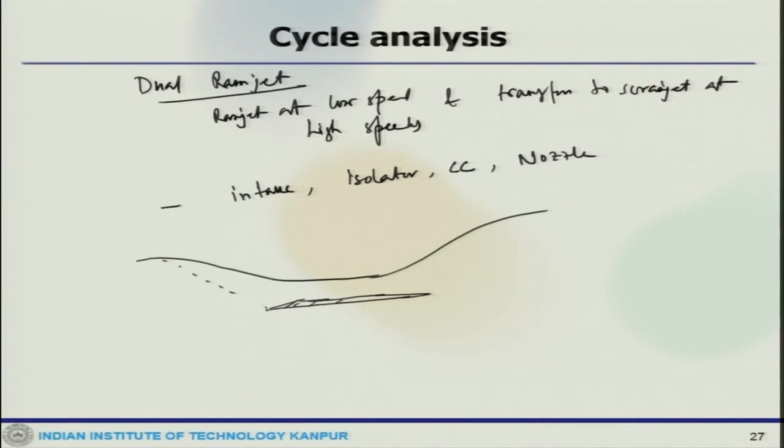Now this portion is essentially the intake, then there would be this portion, which is called the isolator, then this portion, which is combustion chamber, and this is nozzle. Also, if you draw the T-S diagram, then you can always do this aerothermodynamic analysis. Essentially, these are also some of the advancement in the scramjet application, where people can use all this.